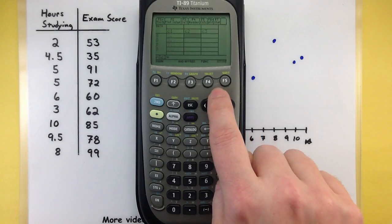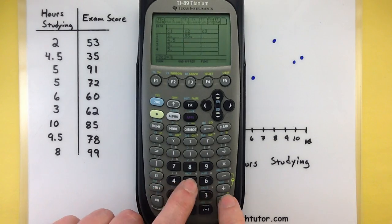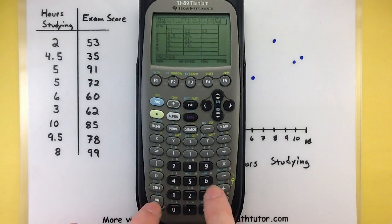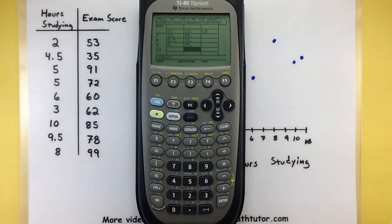Let's get to the top of that second column and do the same thing. So let's see 53 35 91 72 60 62 85 78 99. Okay it looks pretty good. Both my lists are exactly the same size so I don't think I left anything out.